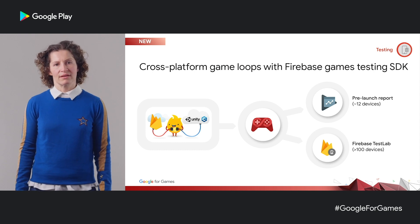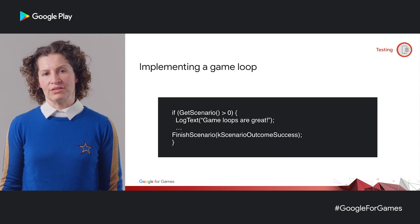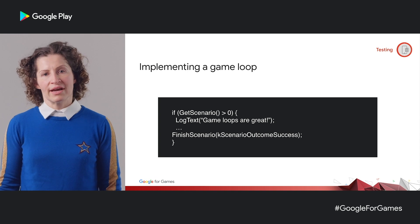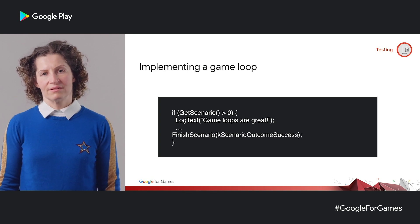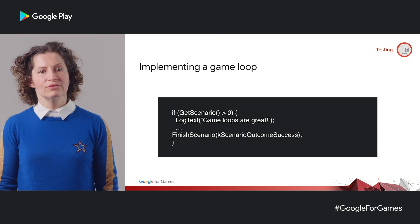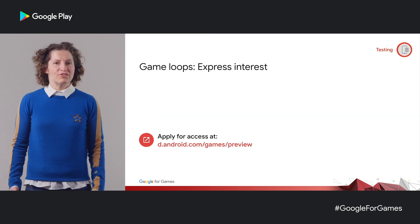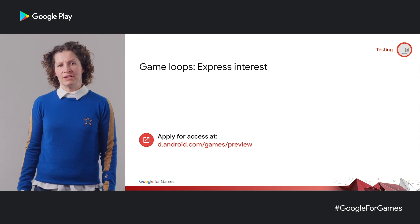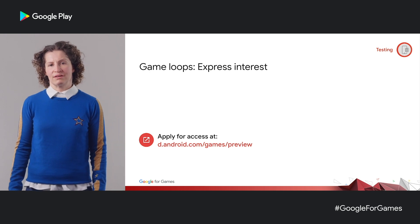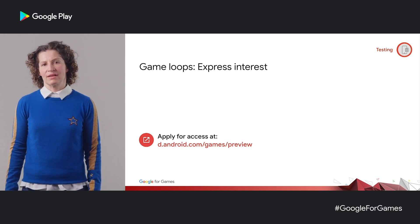What does this look like? This is all you need to write in your native code. To call an action for your game loop, you write 'get scenario', and then after the loop, you call 'finish scenario'. If you would like to explore how you can build this powerful new feature into your test strategy, please sign up at the link here.